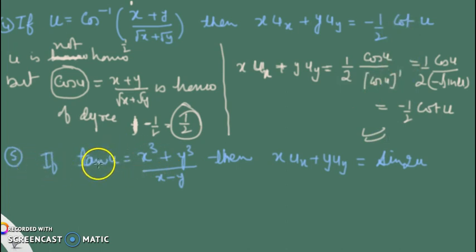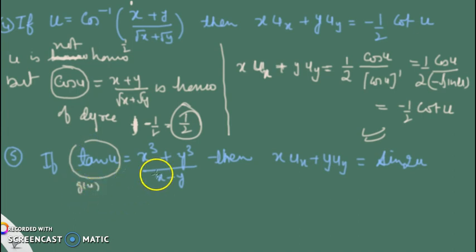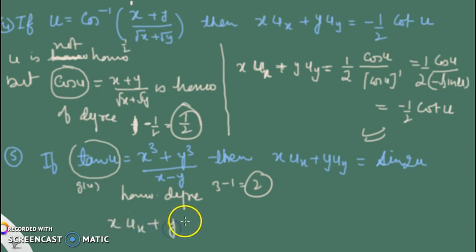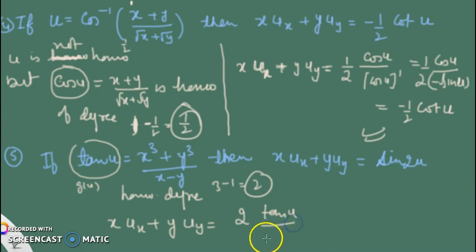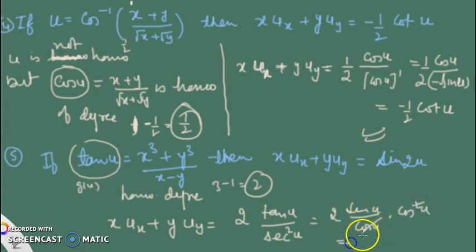In the next question, tan(u) = (x³+y³)/(x−y), which is a homogeneous function of degree 3 minus 1 = 2. Applying the general result: x·∂u/∂x + y·∂u/∂y = n·g(u)/g'(u) = 2·tan(u)/sec²(u). Simplifying: 2·sin(u)/cos(u)·cos²(u) = 2·sin(u)·cos(u) = sin(2u). Thank you.